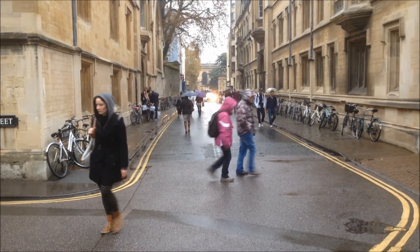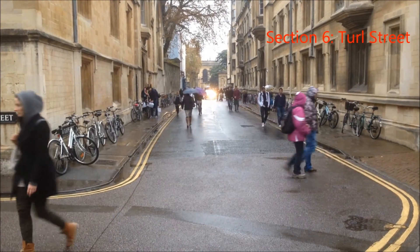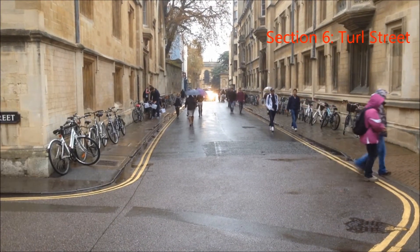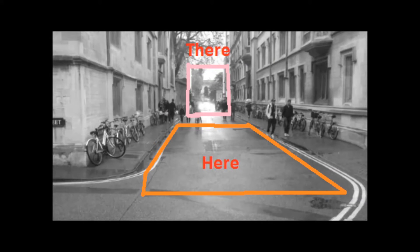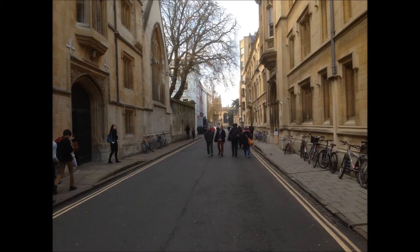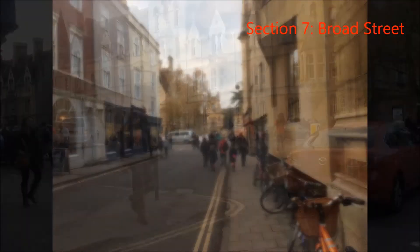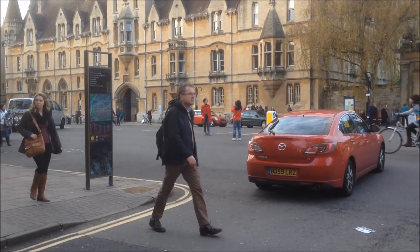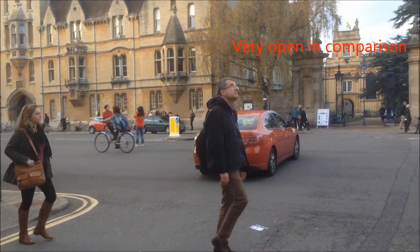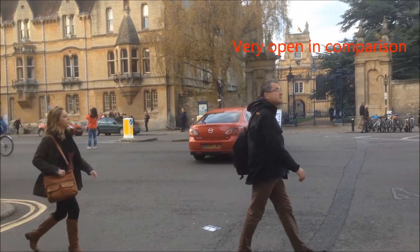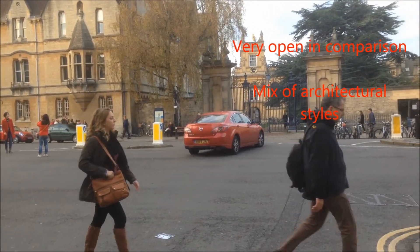This point of deflection leads us onto Turl Street. On this road there is a strong sense of here and there, as the street joins the much wider and more expansive Broad Street. Walking onto Broad Street, this couldn't be more apparent, as the space is very open in comparison and there is a mix of architectural styles.